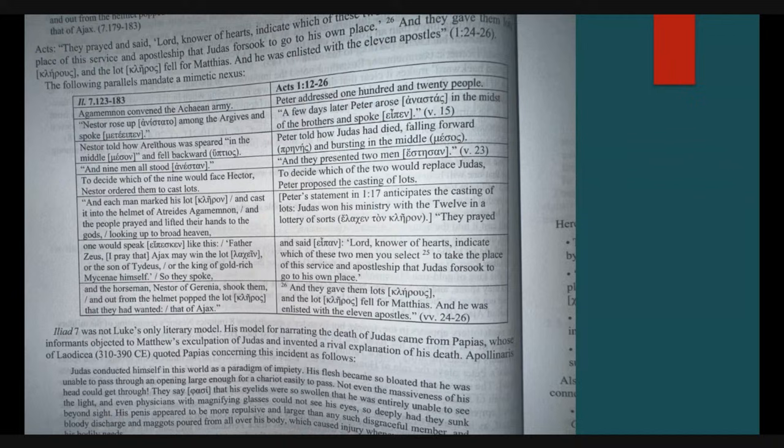To decide which of the nine would face Hector, Nestor ordered them to cast lots. To decide which of the two would replace Judas, Peter proposed the casting of lots. And each man marked his lot and cast it into the helmet of Agamemnon. And the people prayed and lifted their hands to the gods, looking up to broad heaven. Peter's statement anticipates the casting of lots. Judas won his ministry with the twelve in a lottery of sorts. They prayed. This word Kleros is where we get the word clergy for Christians. They're selected by lots, in a sense.